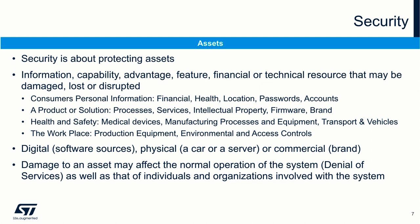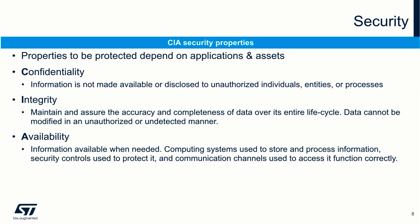There could be many different kinds of assets. For example, assets could be information, capability, advantage, feature, financial, or technical resources that may be damaged, lost, or disrupted. An asset could be in different formats — it can be digital, physical, or commercial. Damage to an asset may affect the normal operation of the system, as well as that of individuals and organizations involved with the system.